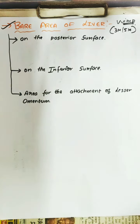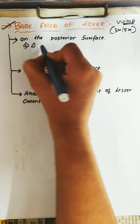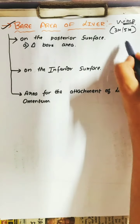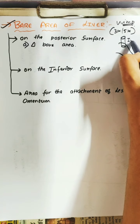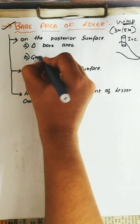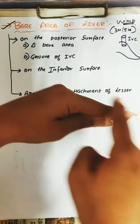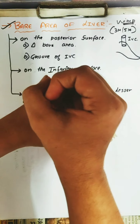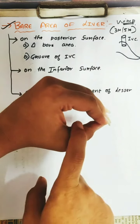On the posterior surface, you can find a triangular bare area. There is a right triangular ligament and there is attachment of the inferior vena cava here. So there is a groove for the IVC — inferior vena cava. This triangular shape is the bare area. If there is removal of the inferior vena cava, you can see a groove here, so this groove is a bare area.